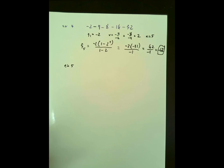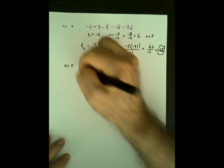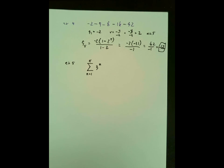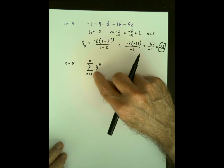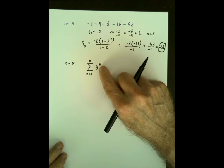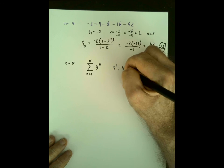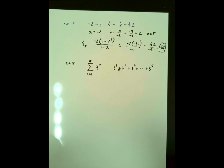Example 5: what if they give it to you in sigma form? Something like: sum from n = 1 to 5 of 3 to the n. That is our geometric series written in sigma notation — we're adding up the first five terms where each term is generated by 3 to the n. So the first term is 3 to the 1, the second is 3 to the 2, the third is 3 to the 3, up to the fifth term, 3 to the 5.